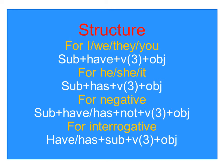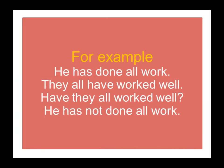For third person singular — he, she, and it — the structure is: subject + has + verb third form + object. For negative, it is: subject + have or has + not + verb third form + object. For interrogative, the helping verb comes first: have or has + subject + verb third form + object.